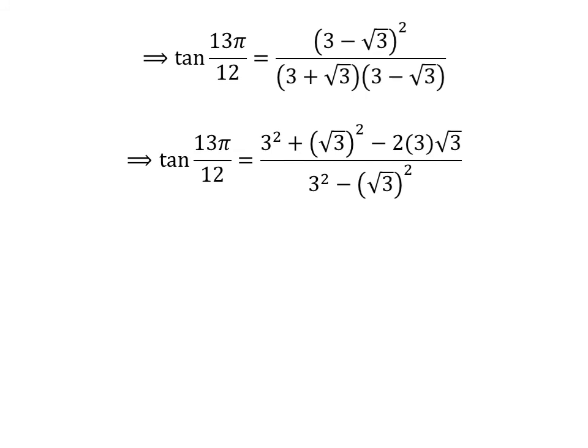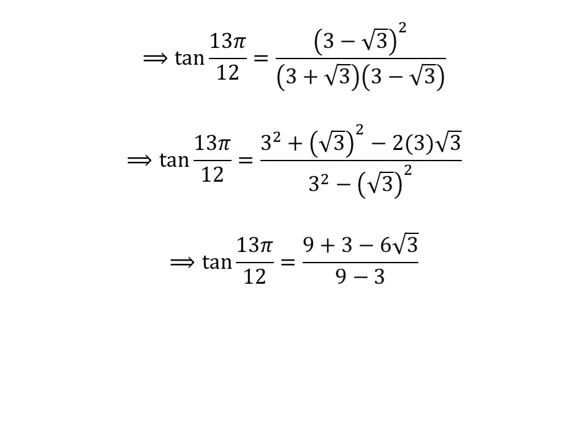Let us expand the square of 3 minus square root of 3. In the numerator we have square of 3 plus square of square root of 3 minus 2 times 3 times square root of 3, and in the denominator we have 3 squared minus square root of 3 squared. Square of square root of 3 is 3 and square of 3 is 9. So tangent of 13 times pi upon 12 is equal to 12 minus 6 times square root of 3, upon 9 minus 3, which further simplifies to 12 minus 6 times square root of 3, upon 6.